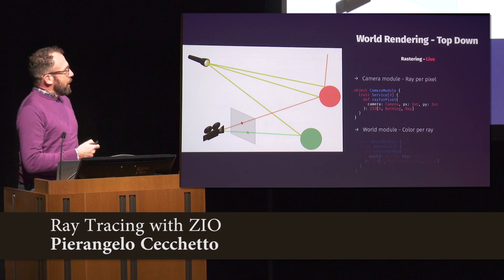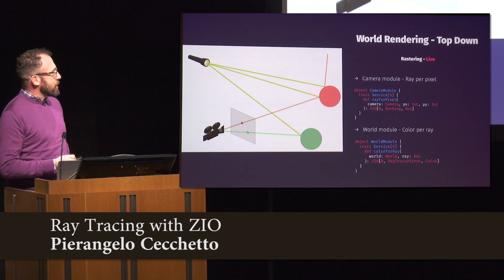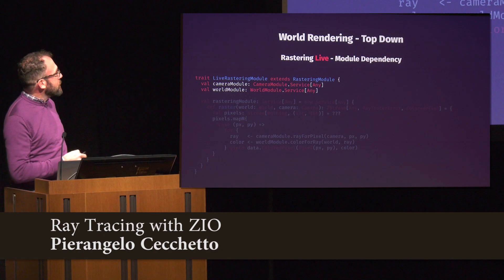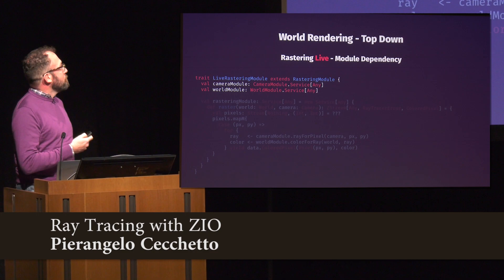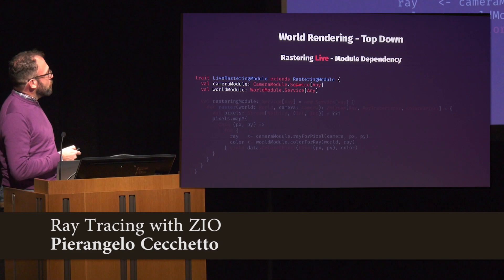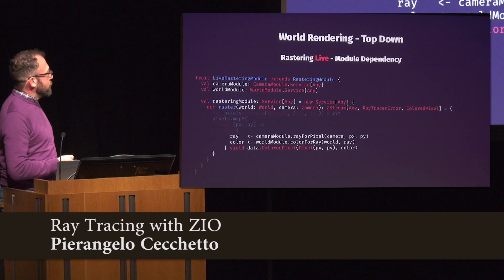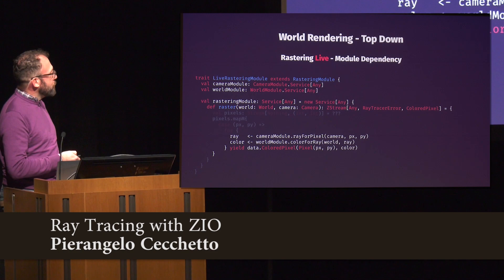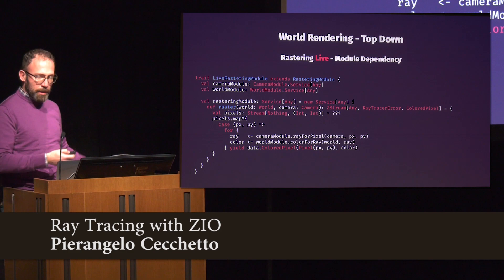With these two modules defined as dependencies, we bring them in as vals in our live implementation of the rastering module. Our stream is produced by asking for the ray for a given pixel, asking for the color for that ray, putting them together, and producing the stream of all colored pixels.